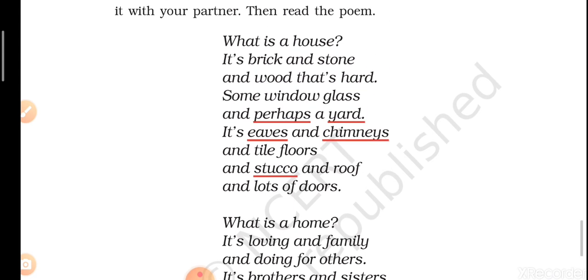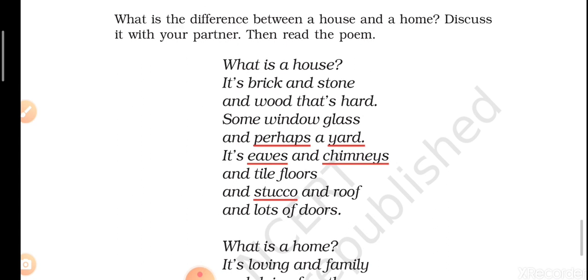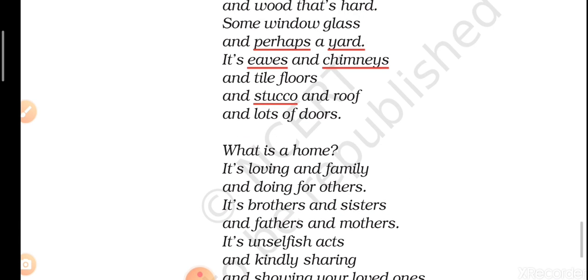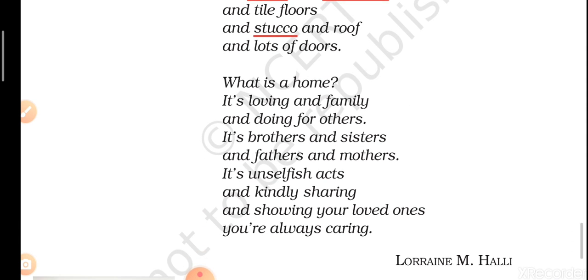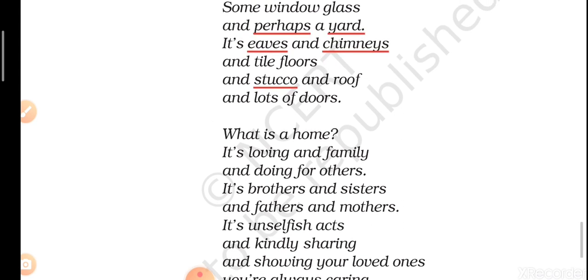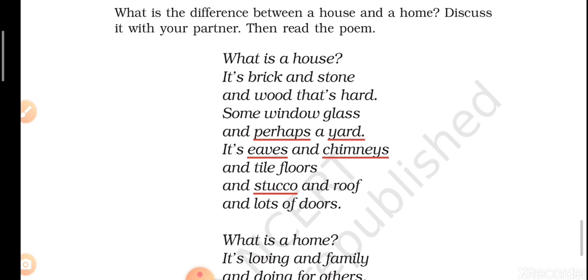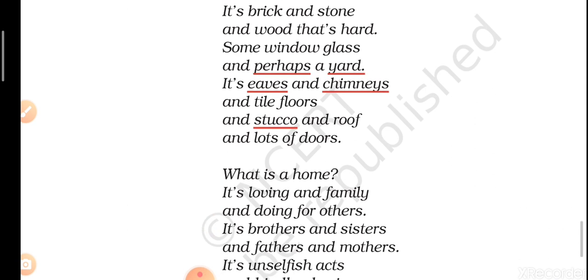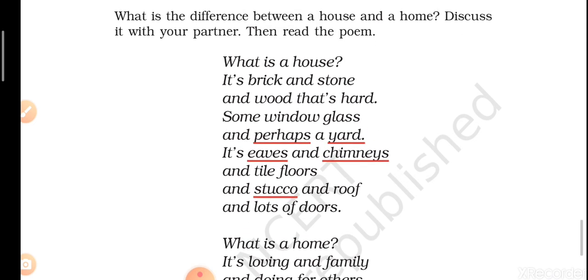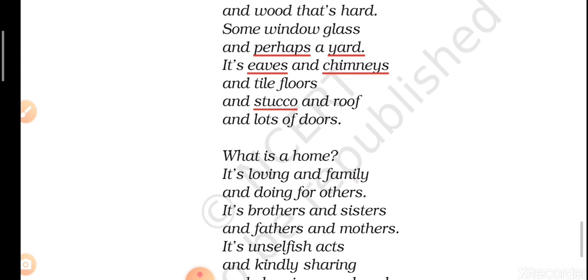So basically, in the first stanza the poet has told us about the materials used to make a house — glass, wood, brick, stone. These are the materials used to make a house. And what makes a house a home? The loving family. When the loving family starts living in a house, that converts that house into a home. This is the basic idea in this poem. It's a very short poem and I hope students have enjoyed it. Read this poem again and comment below about what you have understood — the difference between a house and a home. Bye bye, take care, keep studying, keep working hard.